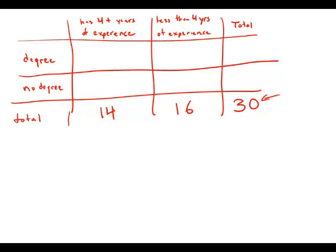We have 18 who have degrees, so that means there must be 12 people who don't have degrees. And then there are 3 people who fit into this box of no degree and less than 4 years of experience, the people probably who will not get hired.